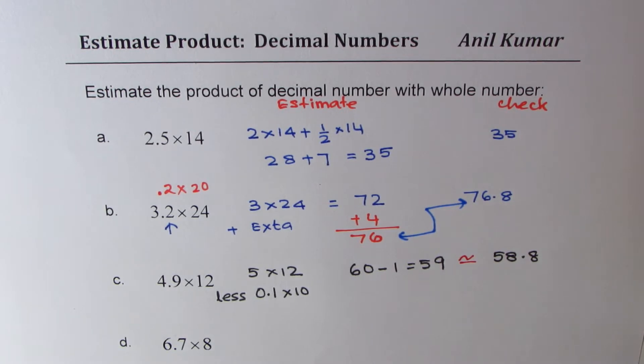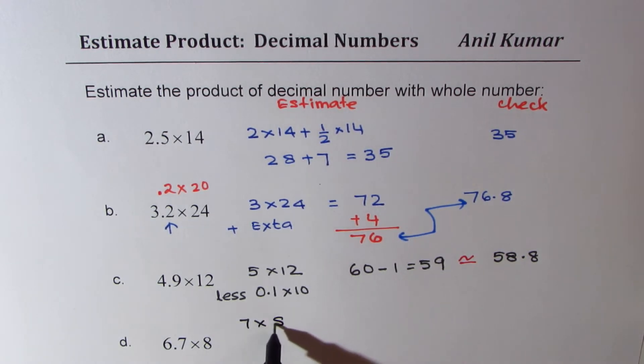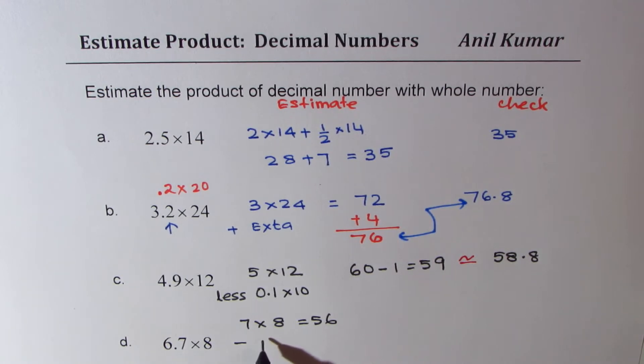The last is 6.7 times 8. Now we can round this higher, which is 7 times 8, which is 56. And we have to less. So approximately, because this is less than 10, we can say approximately 6. So we'll do minus 6 and estimate this as 50. I know this is not a very good estimate.